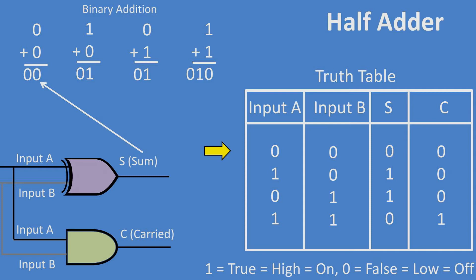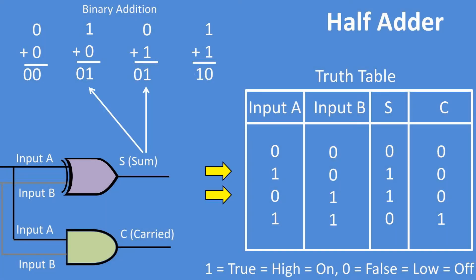Let's go over some binary addition to see how this works. If we add zero plus zero, this equals zero, which is the exclusive OR output, or the sum. If we add one plus zero, or zero plus one, this equals one, which is the exclusive OR output again, or the sum output.